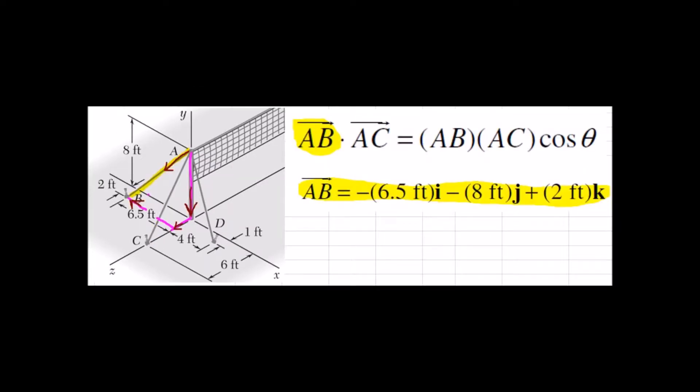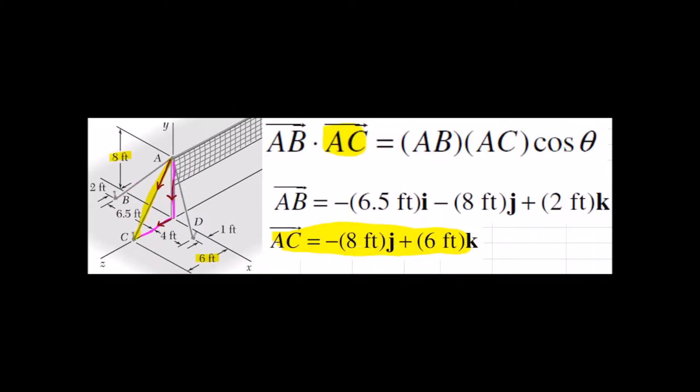First, break vector AB into its I, J, K components by just coming down from the top and walking in the direction of the coordinate axes. We can do the same thing for the other cable, AC. So we're starting at the top and just walking along those coordinate axes and grabbing those distances.